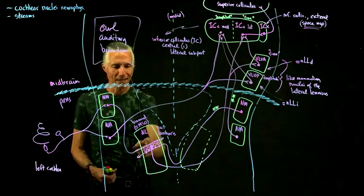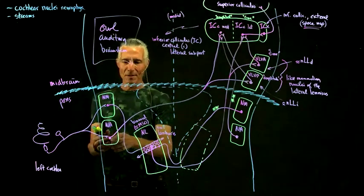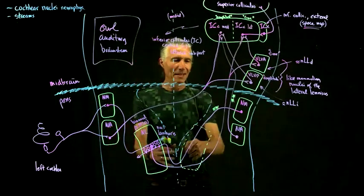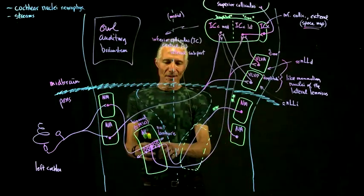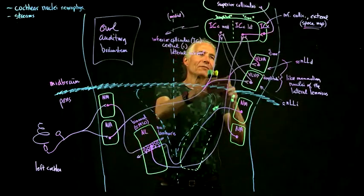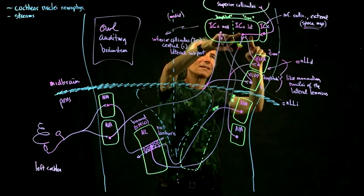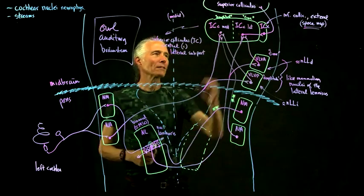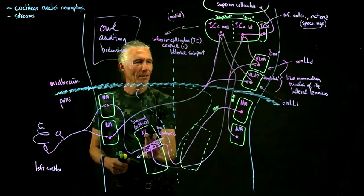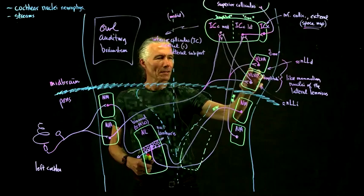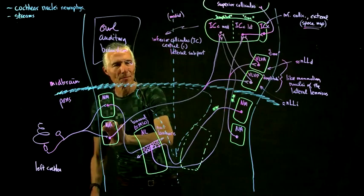To confirm: nucleus magnocellularis projects down to nucleus laminaris — that is the time pathway — which mostly feeds the time nucleus of the lateral lemniscus and the inferior colliculus central nucleus lateral part. The amplitude stream comes mainly from nucleus angularis projecting to the inferior colliculus central nucleus medial part.